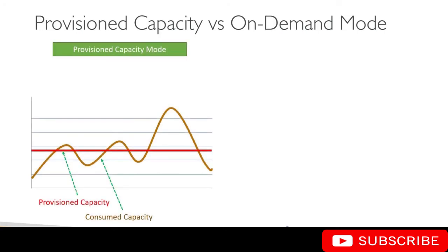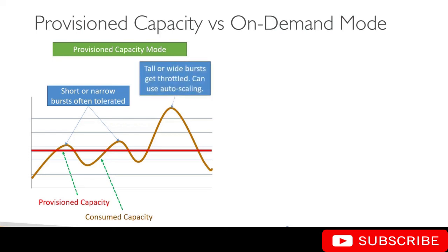Here we have a graph that represents provisioned capacity mode. The red horizontal line is the capacity that you have provisioned on the table, whereas the curve is your actual consumption. You can see there are two or three periods where you are going above the provisioned capacity, but if these bursts are short and narrow, they often get tolerated. If the bursts are tall and wide, they may not get accommodated, which can result in throttling — and this is where auto-scaling can help to accommodate these larger bursts of capacity.